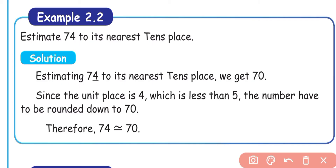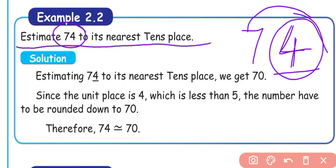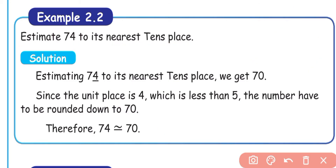Example 2.2: Estimate 74 to its nearest tens place. The ones place digit is 4. Underline the number 4. Since 4 is less than 5, round down: 7 tens stays as 7 tens, so 74 rounded to the nearest tens place is 70.